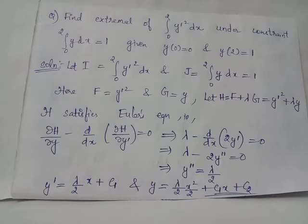Euler's equation becomes λ − d/dx(2y′) = 0. Since d/dx(2y′) = 2y″, we obtain λ − 2y″ = 0, giving y″ = λ/2.